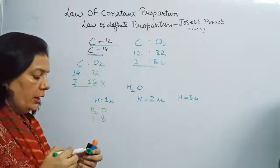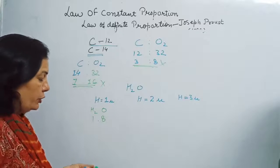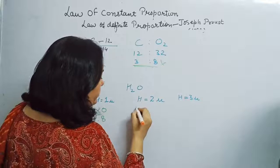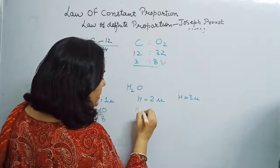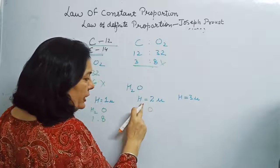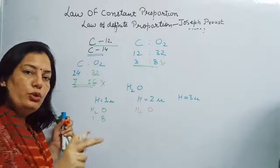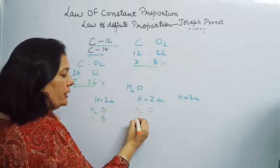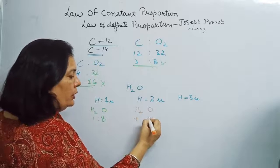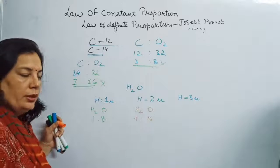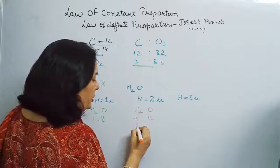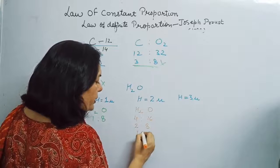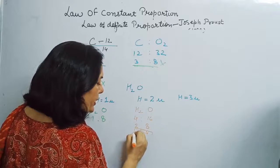Now if deuterium reacts with oxygen, because one atom has 2 units of mass, two atoms have 4 units of mass. So the ratio is 4:16, which simplifies to 1:4.